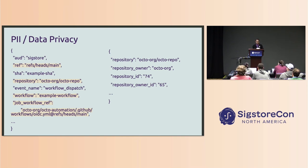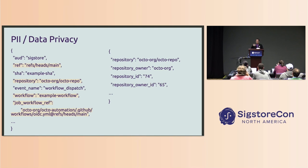It's not exactly clear what a right to be forgotten means in this context. Certainly people are voluntarily sending this information to Fulcio. But then in the future, if they don't want this information to be publicly available, it's not exactly clear what that would look like. I think that's going to be an ongoing conversation in the community about how we might support or handle those types of requests.